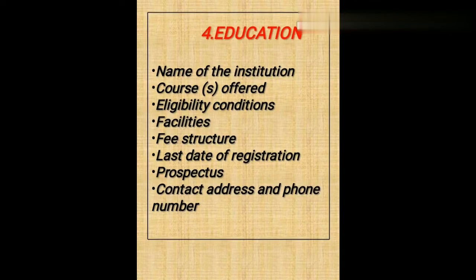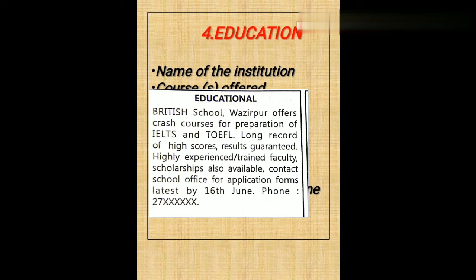The next category is Education. For education, you can draft both classified and commercial advertisements, but you have to check in the question which category is asked. The first thing will be the name of the institution, courses offered, eligibility conditions for students, facilities, fee structure, the last date of registration, prospectus, contact address, and phone number.